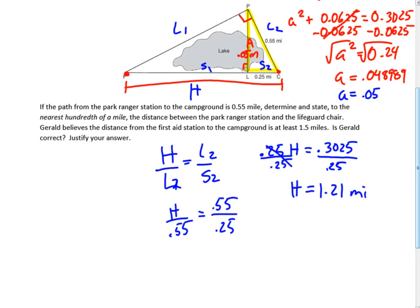So for the last part of the question — Gerald believes the distance from the first aid station to the campground is at least 1.5 miles, is Gerald correct? — he is not correct, because the distance is 1.21 miles, which is less than 1.5. So there's our example: we used the Pythagorean theorem and we used hills.